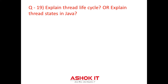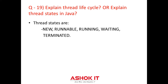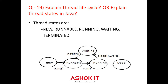Question nineteen: Explain the thread life cycle or thread states in Java. The states are: New, Runnable, Running, Waiting, and Terminated. New — a thread will be in this state before calling the start method. Runnable — a thread will be in this state after calling the start method. Blocked or Waiting — a thread will be in this state when waiting for an object lock to enter a synchronized method or block, or if a deadlock occurs. Running — when the thread is in actual execution. Terminated — a thread will be in this state once it finishes its execution.